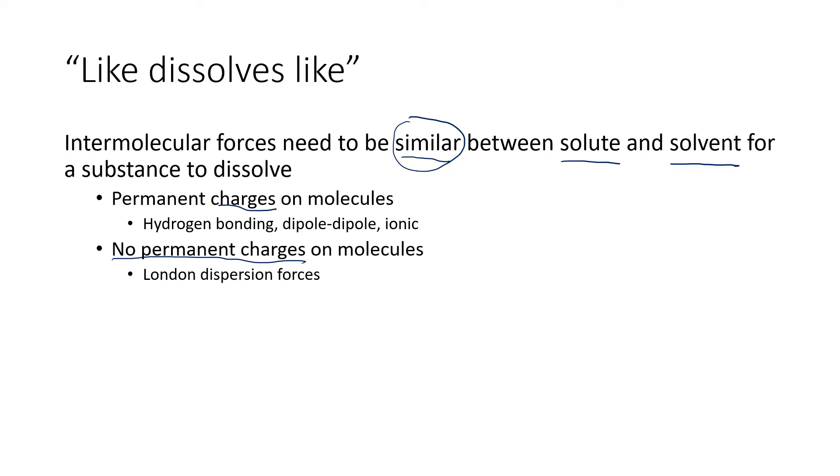The easiest way to think about that is in terms of intermolecular forces. The intermolecular forces that have permanent charges are hydrogen bonding and dipole-dipole. And also, even though we talk about it as bonding, many of the solutes that will dissolve in hydrogen-bonded or dipole-dipole solvents are going to be ionically bonded. So it's something like sodium chloride, where there's a metal plus a nonmetal. So all of those things freely dissolve in one another. Ionic substances, dipole-dipole substances, and hydrogen-bonded substances.